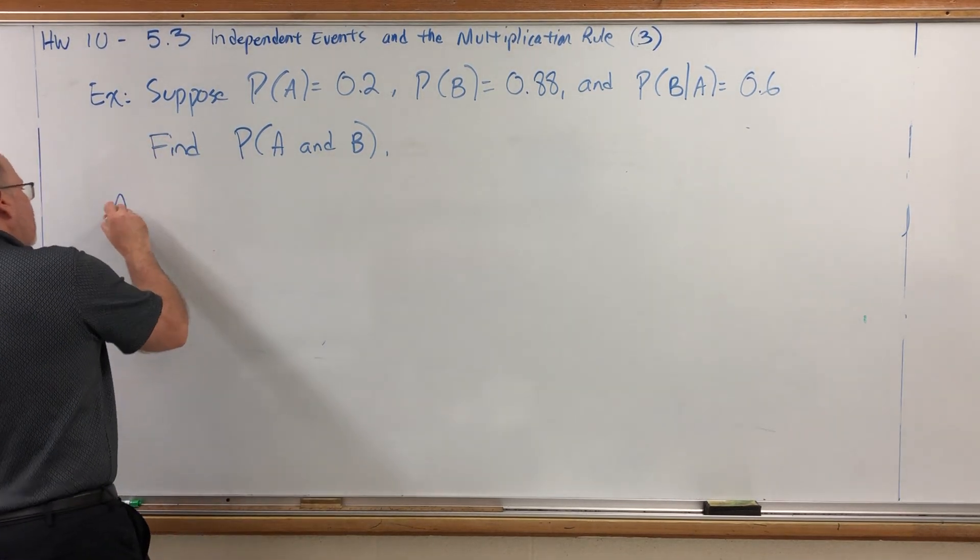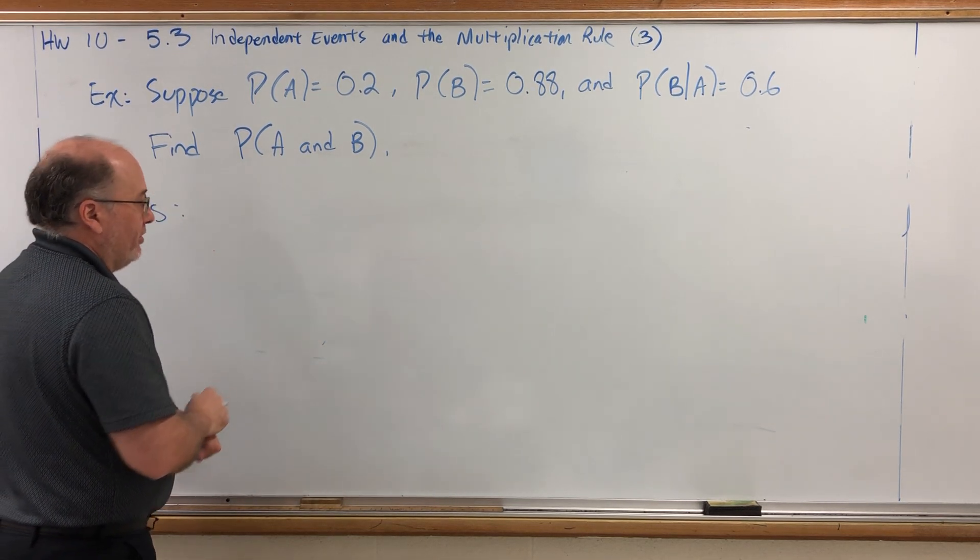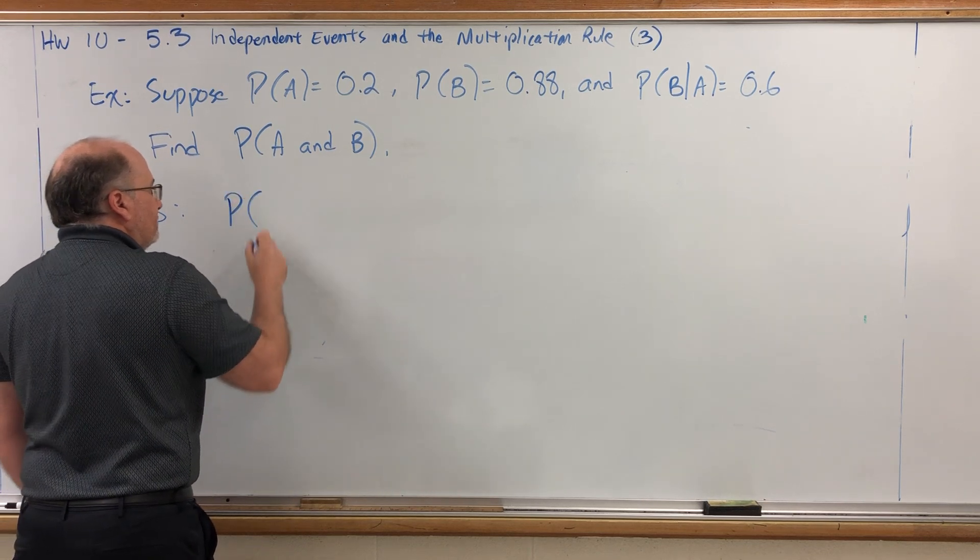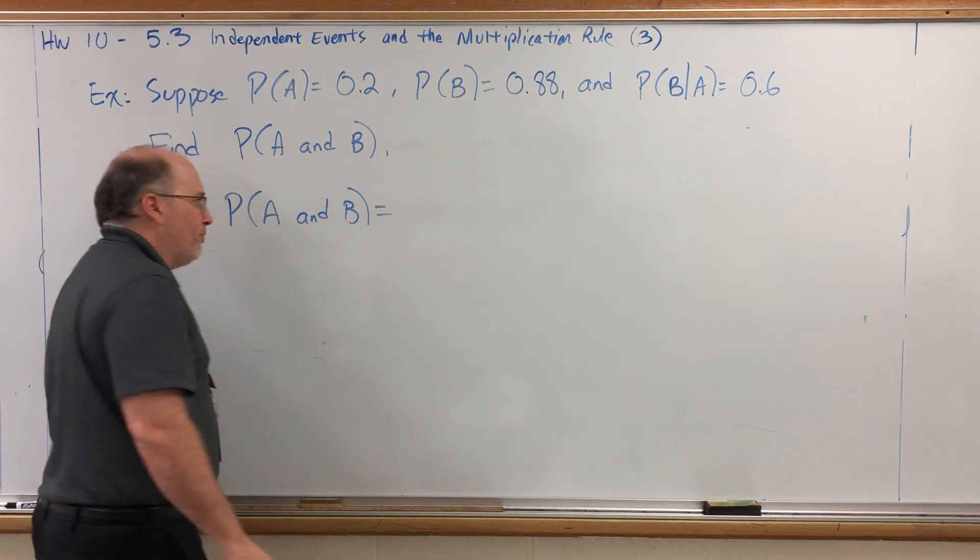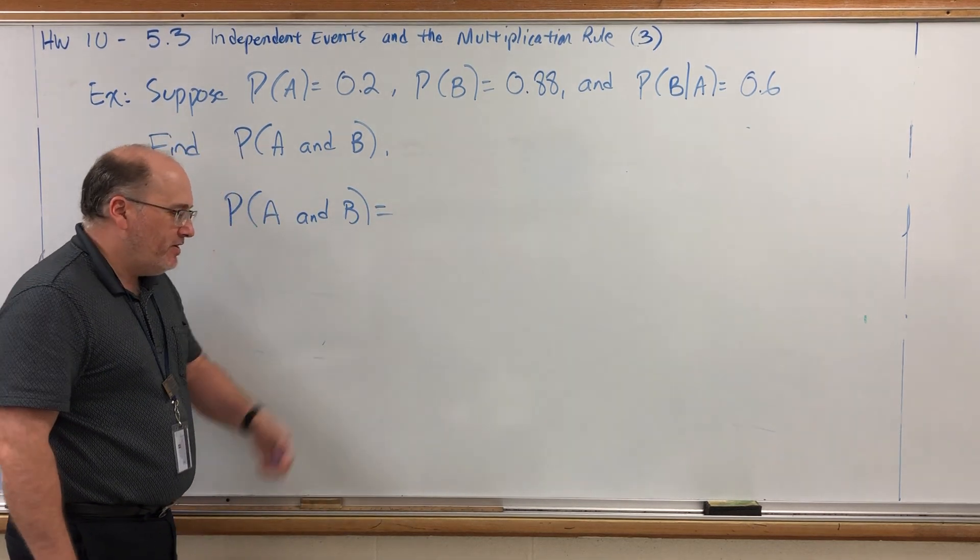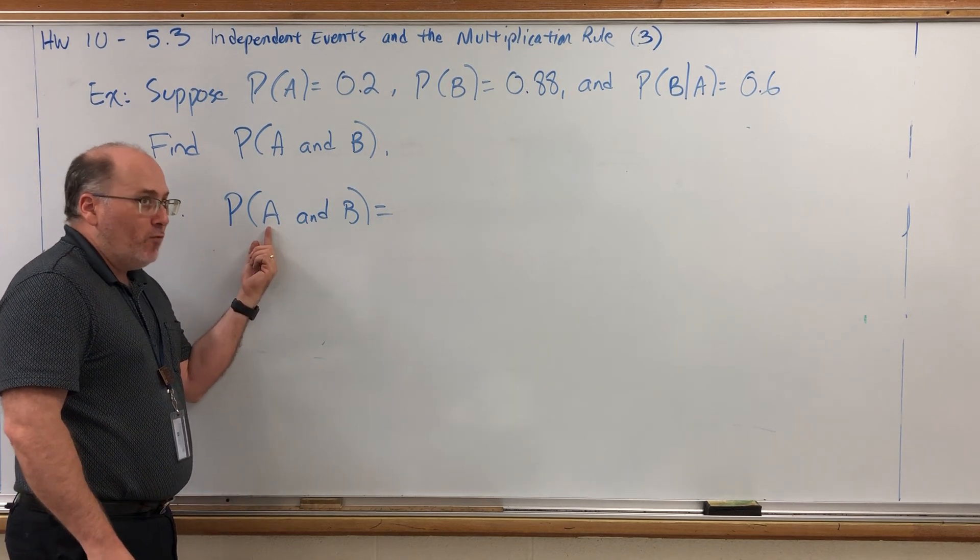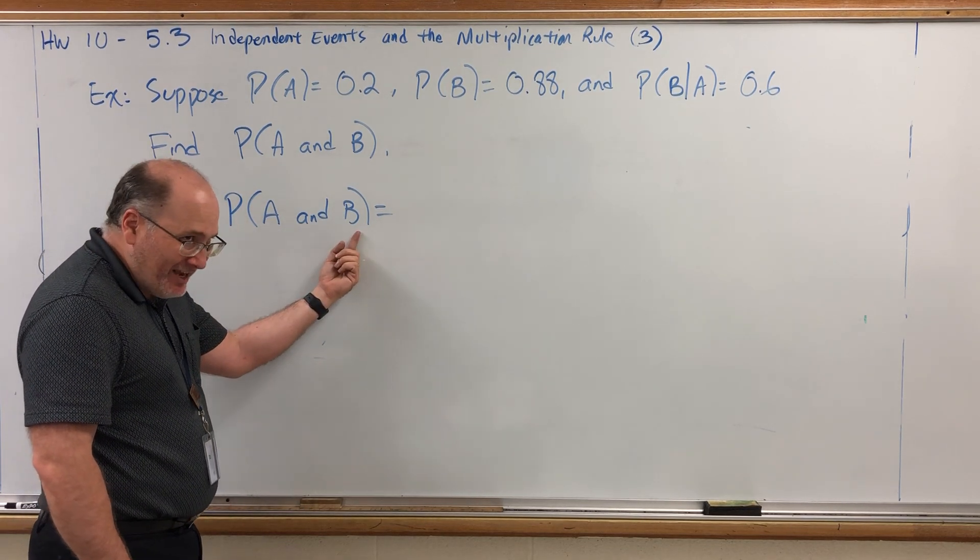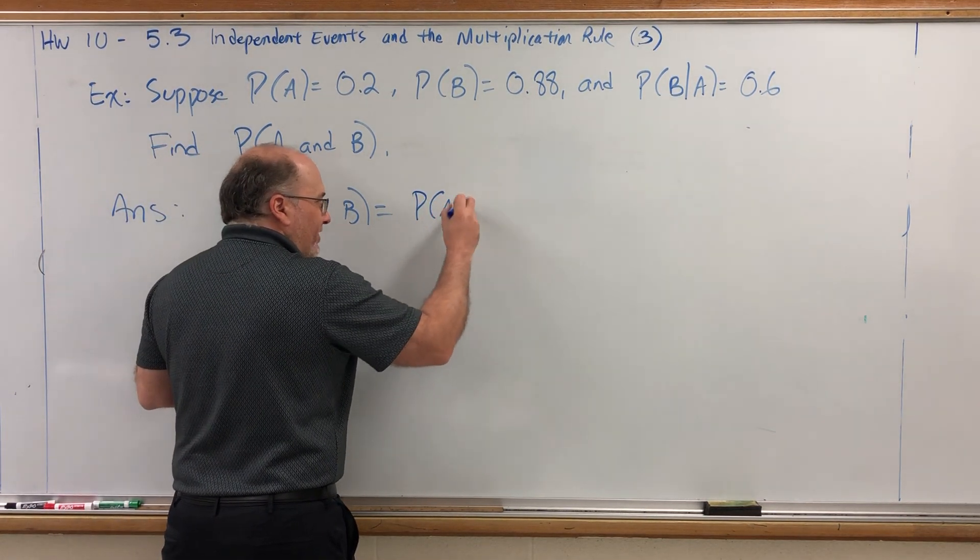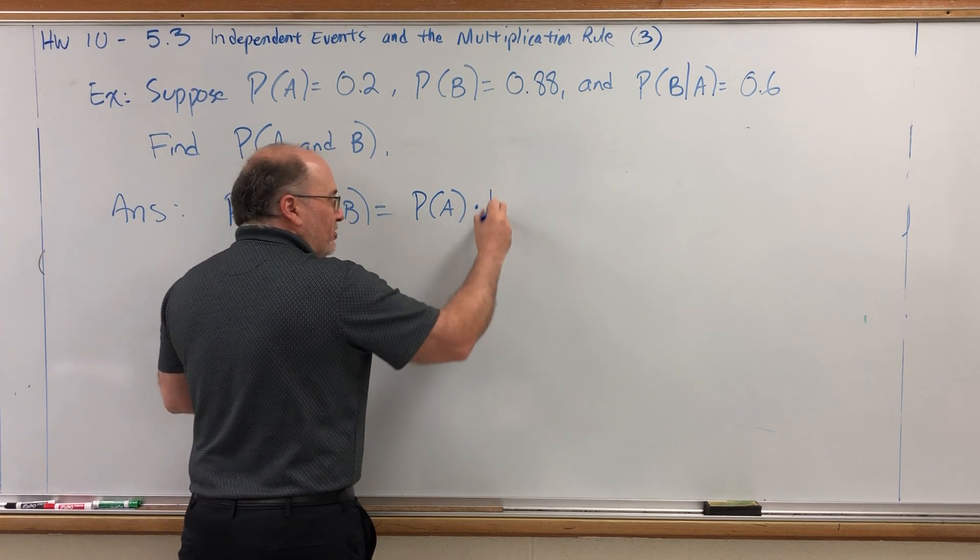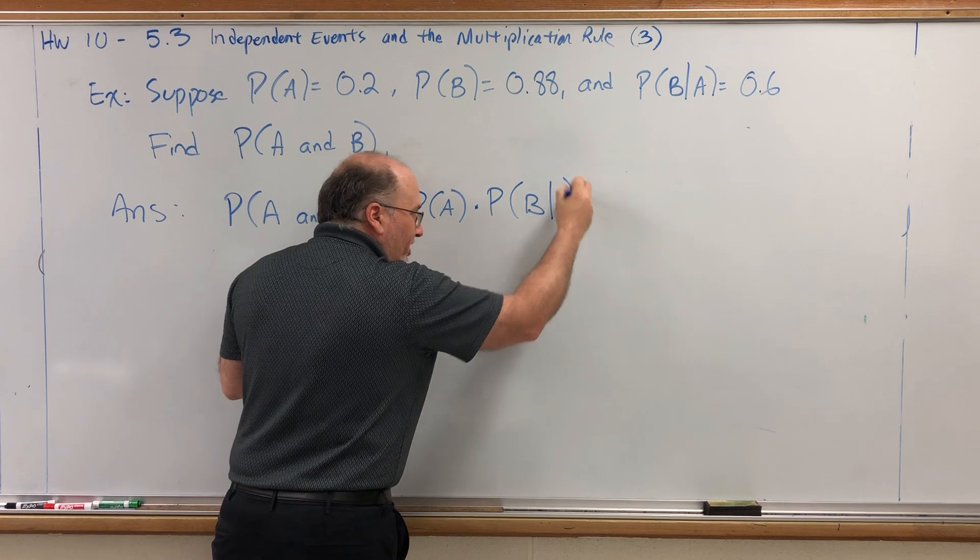This is just a formula, but be careful. We were given some information that we do not need here. The formula for the probability of A and B, and more generically, the probability of one event and a second event, it doesn't matter what they're called, is the probability of the first event times the probability of the second event given that the first event has already occurred.